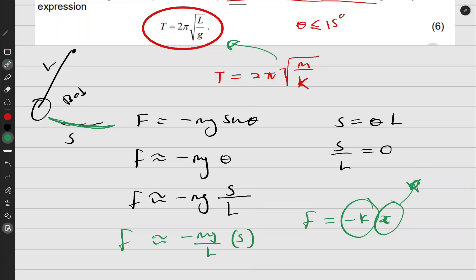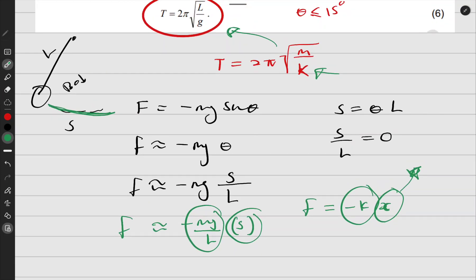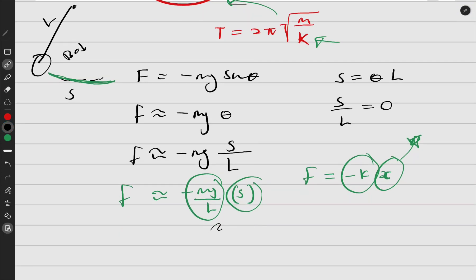We can take this now and plug it into this formula. Since this is k and this is displacement in the same format, we can just plug it in. T equals 2π times the square root of m over k. What is k? k is mg over L.